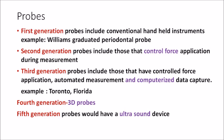After gingivitis, let's go into periodontitis. In simple terms, clinical attachment loss must be present. To diagnose that, the basic instrument is a periodontal probe. There are five generations of periodontal probes. First generation are conventional handheld instruments — for example, the Williams graduated probe. Second generation probes have controlled force application and are pressure-sensitive. Third generation probes have controlled force application plus automated measurement and computerized data capture — examples include the Toronto probe and Florida probe.